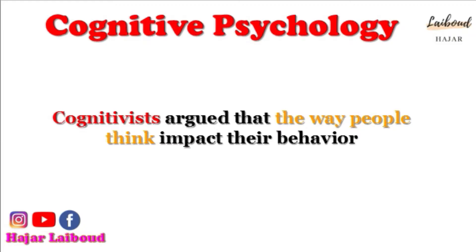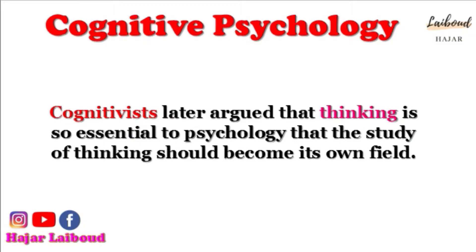Behaviorists denied the existence of thinking but identified it as a behavior. In contrast, cognitivists argued that the way people think impacts their behavior and therefore cannot be a behavior in and of itself. Critics of behaviorism noted that it failed to account for how internal processes impacted behaviors, so cognitivists later argued that thinking is so essential to psychology that the study of thinking should become its own field.